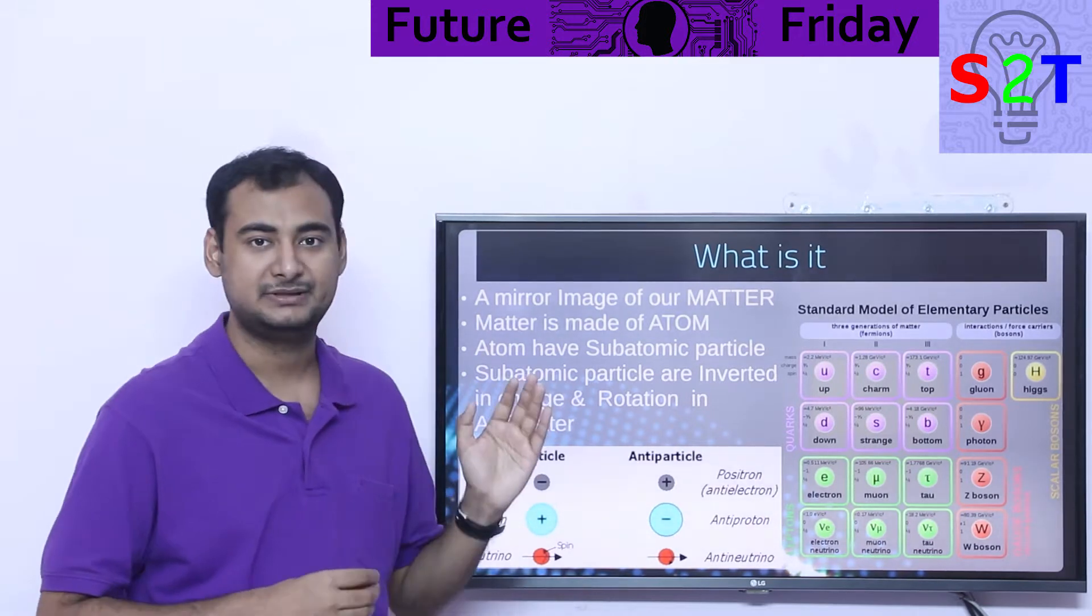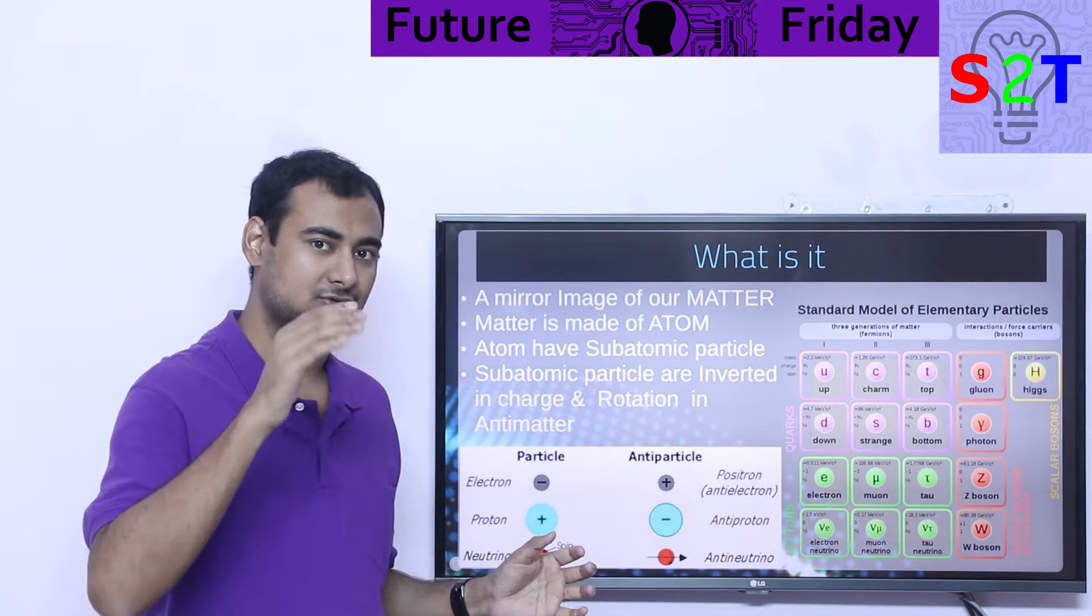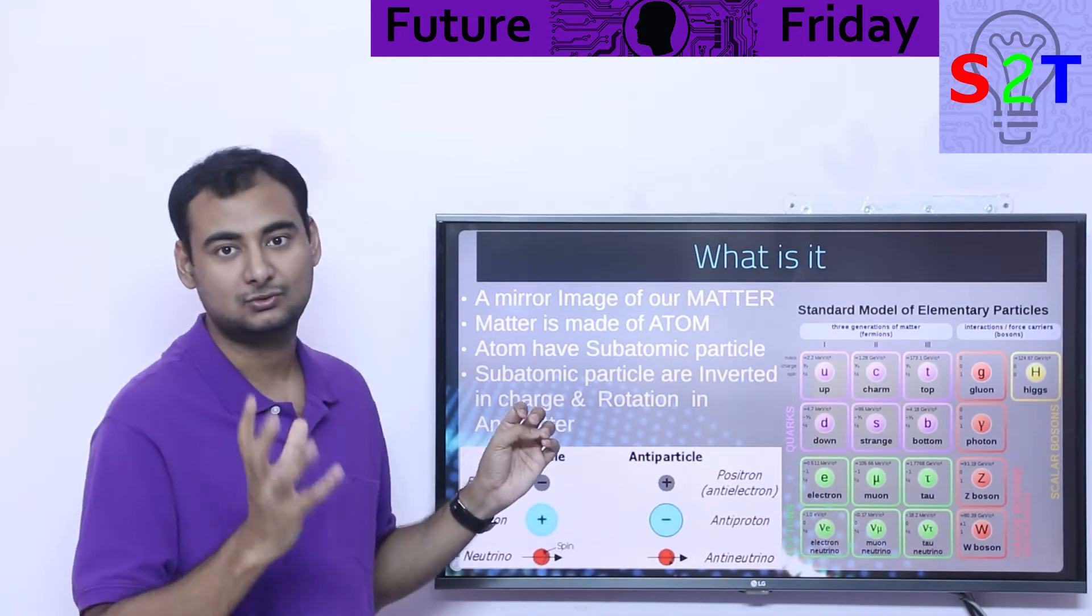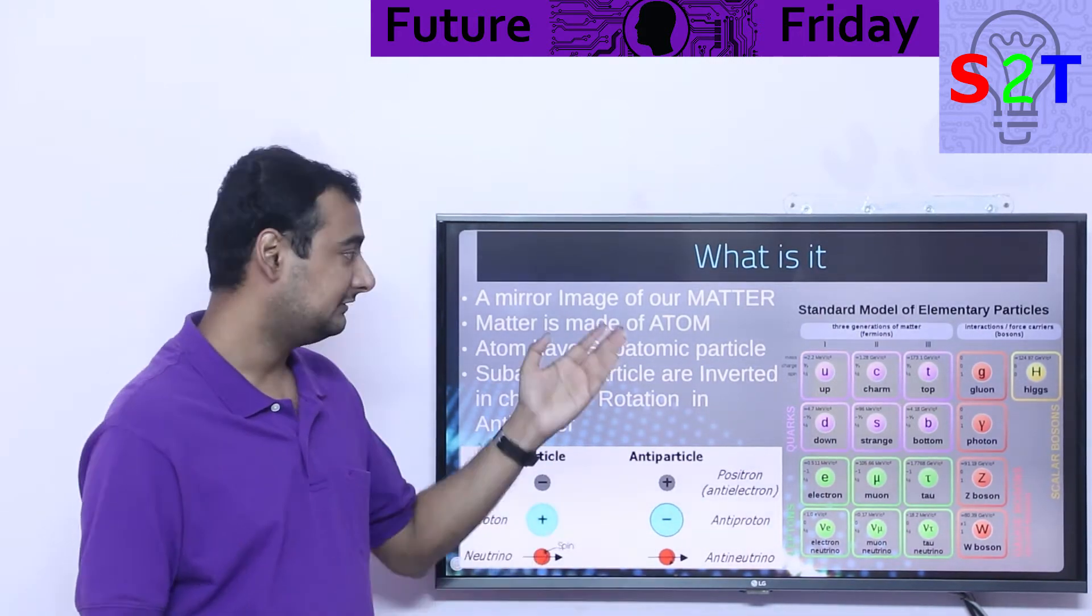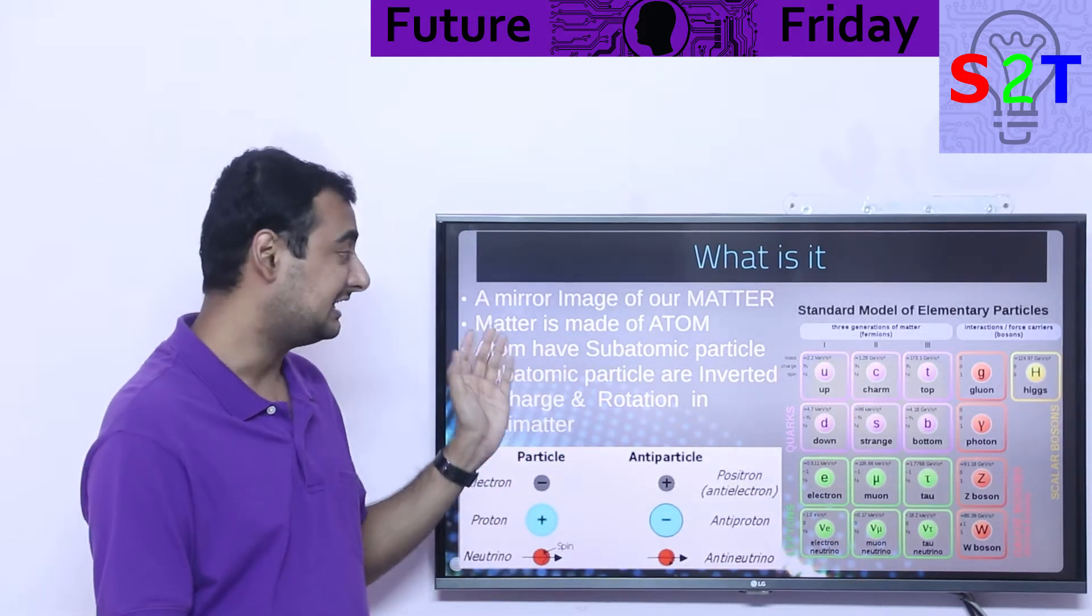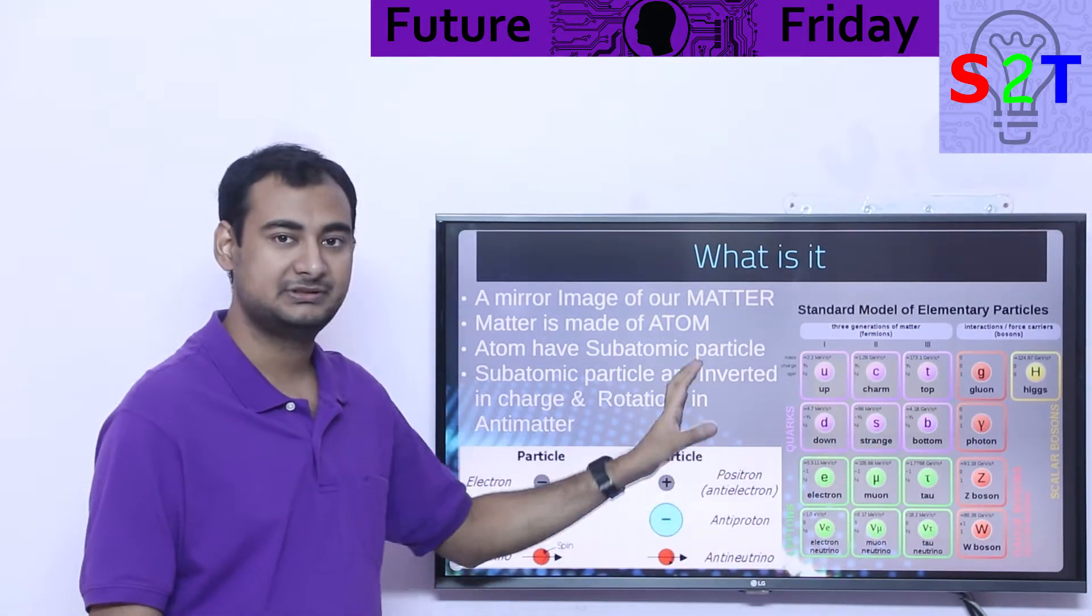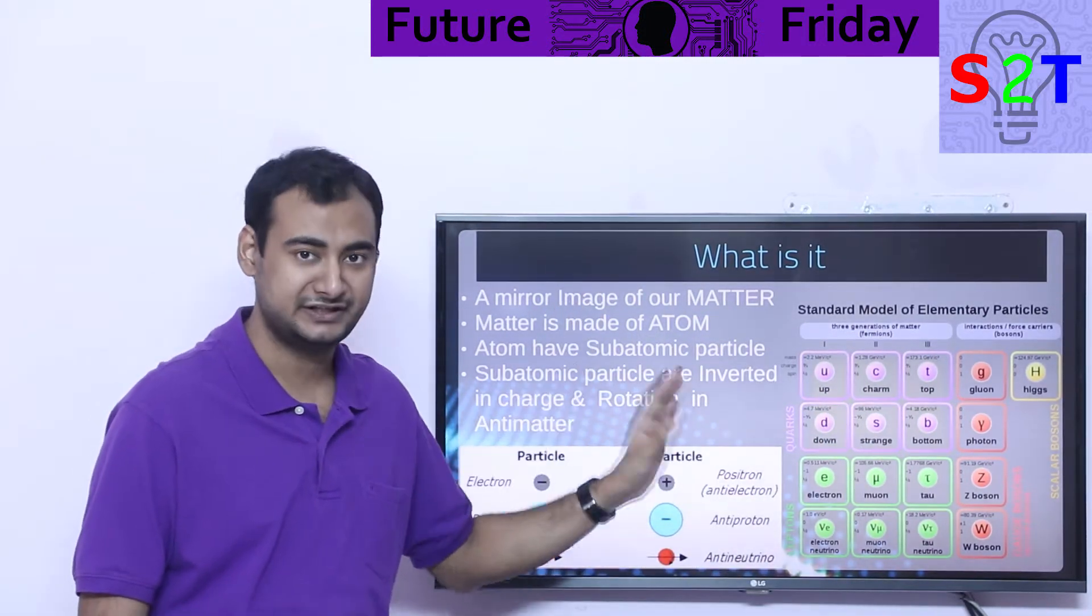We are talking about a mirror image of our matter. So what does that mean? To understand that aspect, you have to go down to the core of matter. Matter is made out of atoms. Now what happens if you go down inside that? Matter is basically made out of atoms. Atom is made out of subatomic particles.